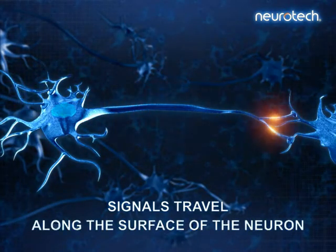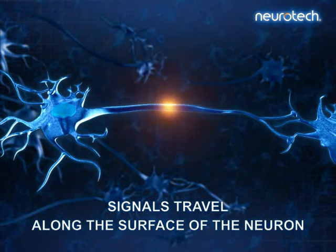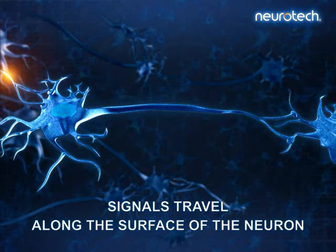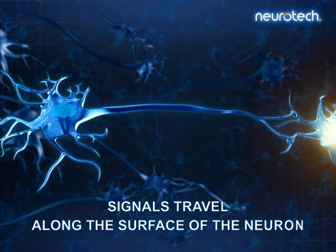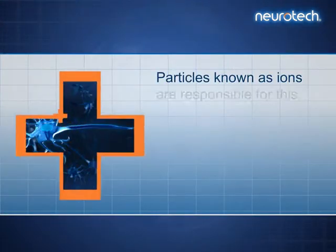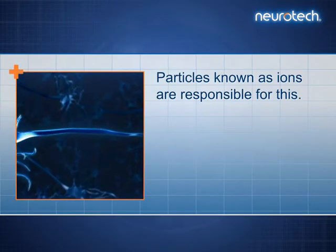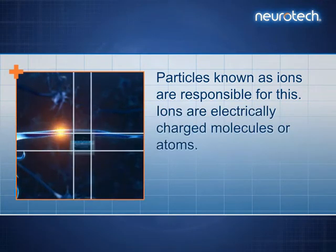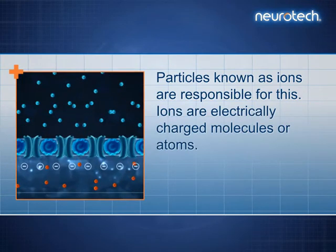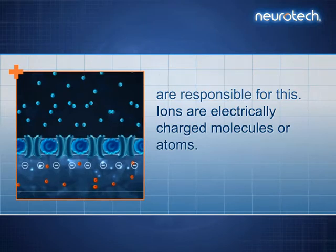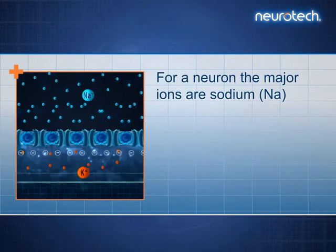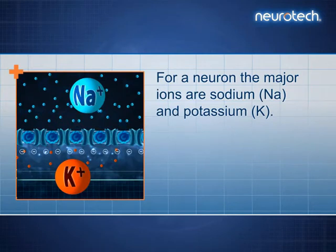Signals travel along the surface of the neuron. Particles known as ions are responsible for this. Ions are electrically charged molecules or atoms. For a neuron, the major ions are sodium, Na, and potassium, K.